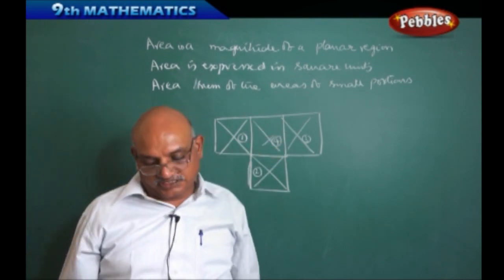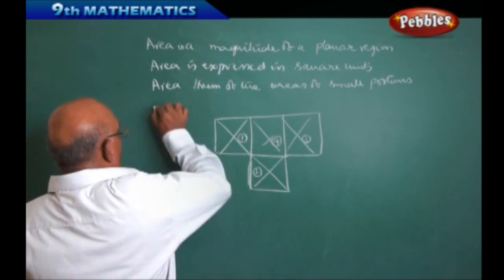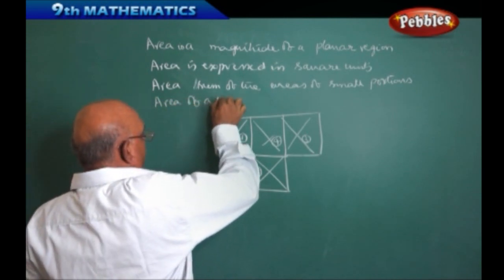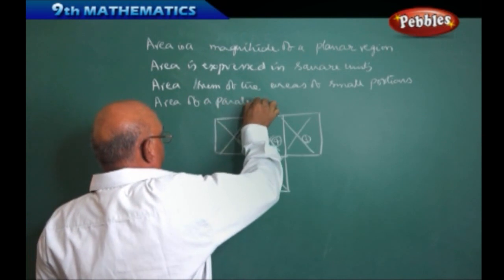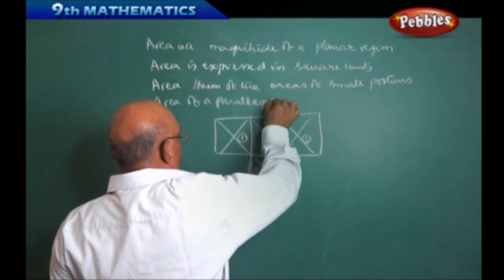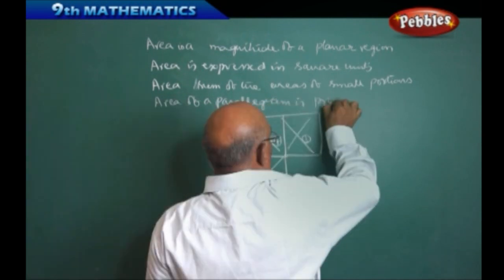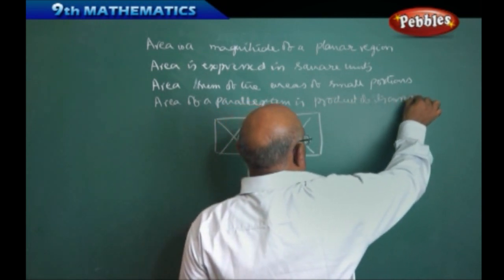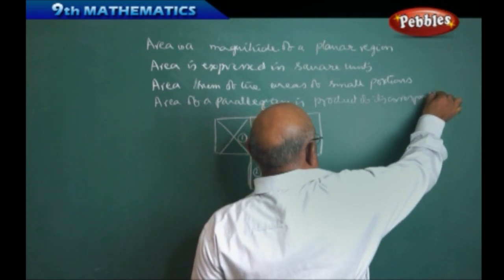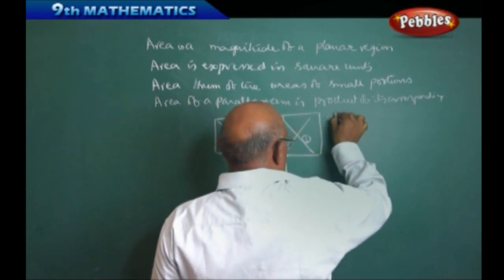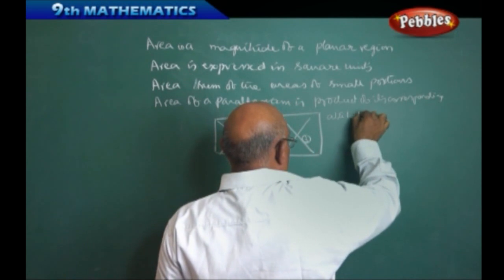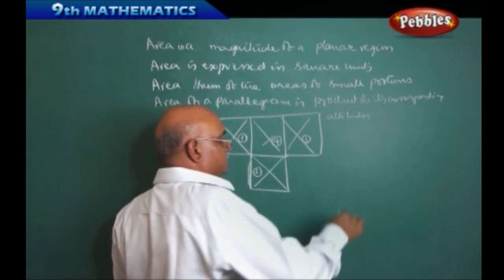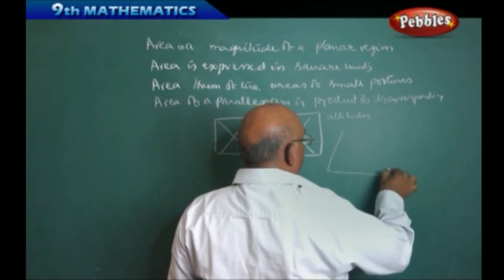Area of the parallelogram is, area of a parallelogram is product of its corresponding altitudes. Corresponding altitudes. What does it mean? We will see. This is a parallelogram.